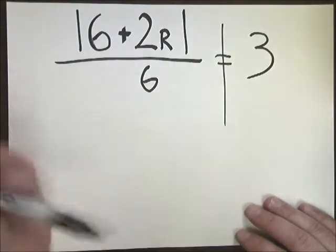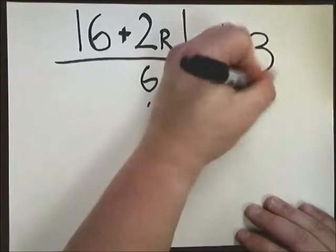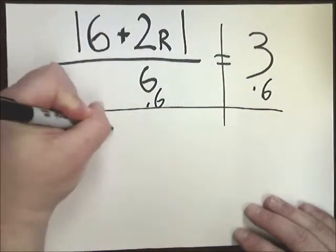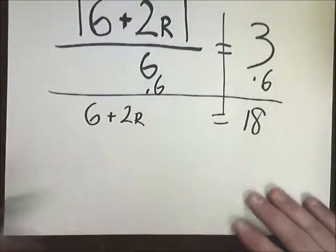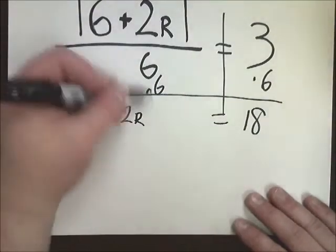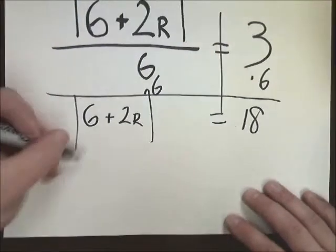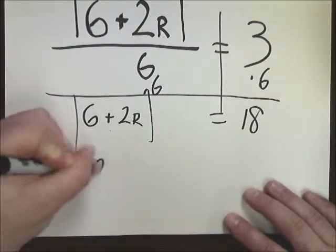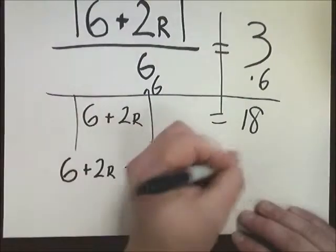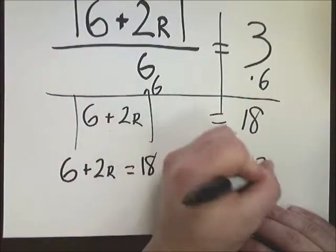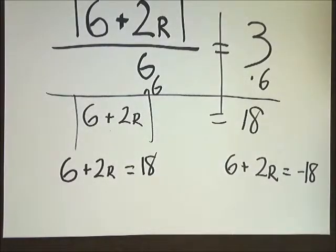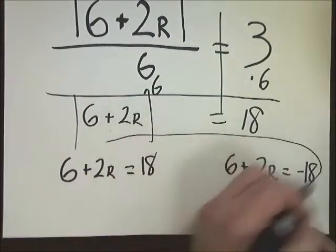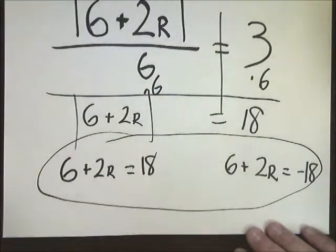Draw the line. To get rid of the whole thing divided by 6, I need to multiply by 6. 6 plus 2r equals 18. So in this case, I'm going to split this in... Oh, sorry. I forgot the absolute value. I'm going to split this into two problems. 6 plus 2r equals 18. 6 plus 2r equals negative 18. Now, if you've been watching these videos until now, you know that you're going to subtract 6 from both sides and divide by 2. I'm not going to solve them out.